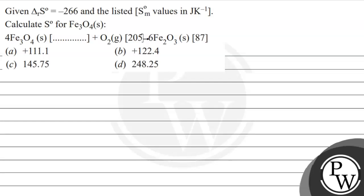Hello, let's read this question. Given ΔrS° = -266 and the listed S°m values, which means entropy, standard entropy, molar standard entropy values in joule per Kelvin, calculate S° for Fe₃O₄. So this is the reaction given to us which we have to find out for Fe₃O₄. And these are the following options given to us.